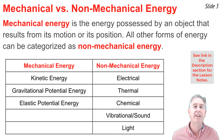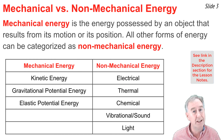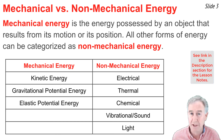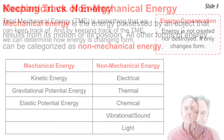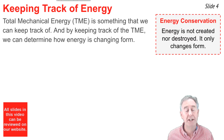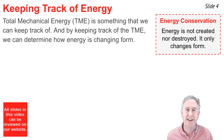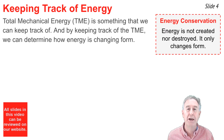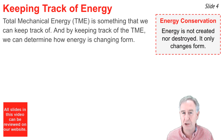Non-mechanical forms of energy include electrical energy, thermal energy, chemical energy, vibrational or sound energy, and light energy. One of your goals in the study of energy is to learn how to keep track of energy. Total mechanical energy is something we can keep track of, because we can make measurements of things like mass, height, and speed to calculate the amounts of kinetic and potential energy, and thus the total mechanical energy.